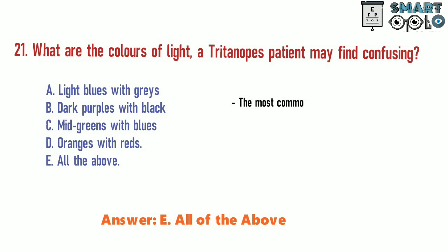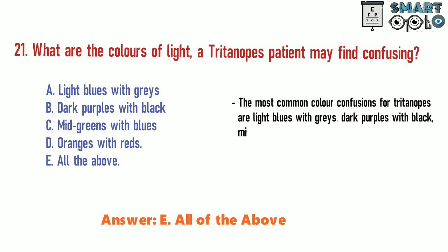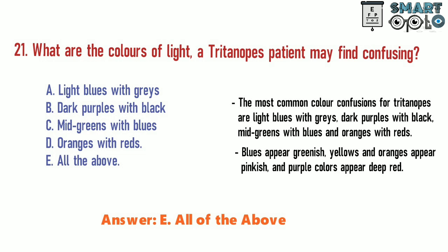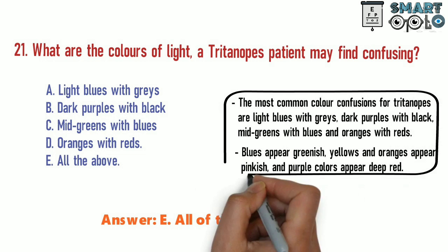The most common color confusions for tritanopes are light blues with grays, dark purples with black, mid-greens with blues, and oranges with reds. Blues appear greenish, yellows and oranges appear pinkish, and purple color appears deep red.